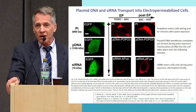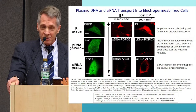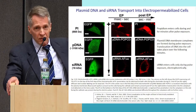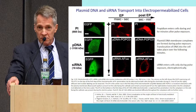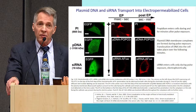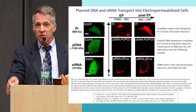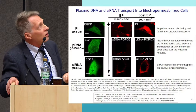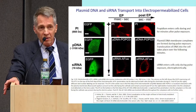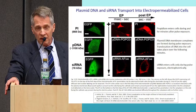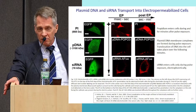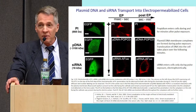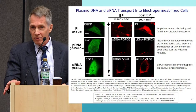Another thing we can't explain is the entry of different kinds of materials through an electroporated cell membrane. We have propidium at the top, plasmid DNA — a common application of electroporation is to allow plasmid DNA to enter the cell for genetic engineering — and also siRNA. The patterns and kinetics of entry of these three kinds of materials into the cell are completely different, and completely undescribed by our standard model.